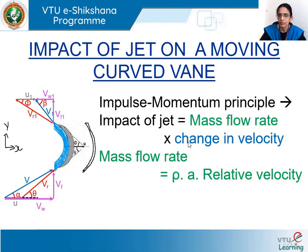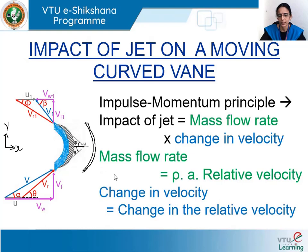For the change in velocity, we need to consider the velocity with which the jet strikes the vane at inlet and the velocity with which it leaves at outlet. Since the jet moves with velocity v and the vane moves with velocity u, we must consider the relative velocities of the jet. The relative velocity at inlet and at outlet must be found, so for calculating the change in velocity we calculate the change in relative velocities. The impulse-momentum principle states: impact of jet = mass flow rate × change in velocity; mass flow rate uses the relative velocity vr, and change in velocity uses the change in relative velocities.